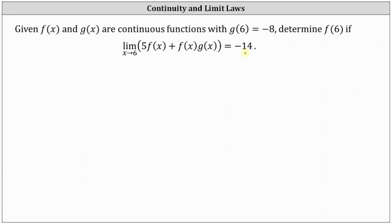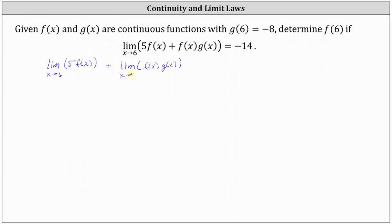We will begin by applying the limit laws to the limit on the left, where the limit of a sum is equal to a sum of limits. This means the limit on the left equals the limit of five times f of x as x approaches 6, plus the limit of f of x times g of x as x approaches 6, and this is still equal to negative 14.